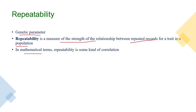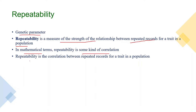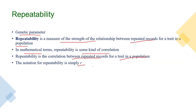In mathematical terms, repeatability is some kind of correlation. It can be defined as the correlation between repeated records for a particular trait in a population. Repeatability is denoted by small r — since correlation is also denoted by small r, that is why repeatability shares the same notation.